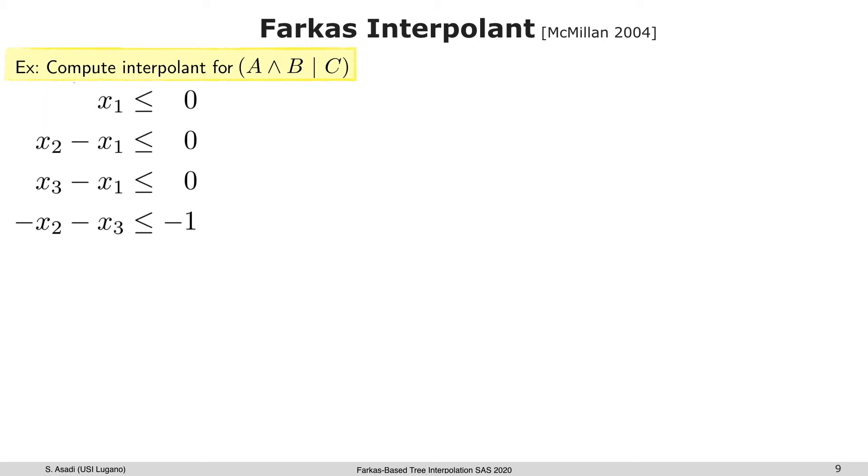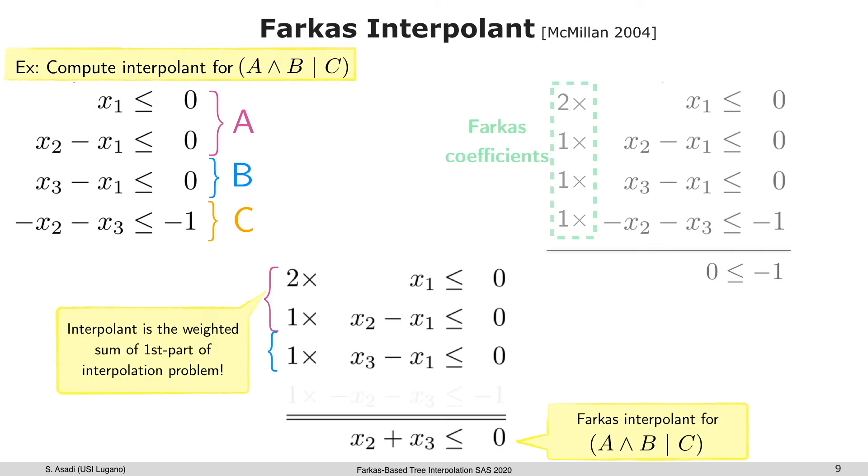First, Farkas interpolant. This is one way to compute an interpolant in linear arithmetic used in many modern SMT solvers that relies on Farkas lemma. The Farkas interpolant after partitioning is a weighted sum of A and B, and the resultant interpolant will be x2 plus x3 less than or equal to zero.